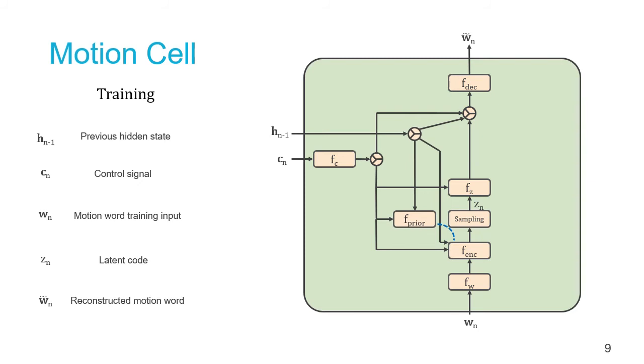The reconstructed word is computed by concatenating the latent code features, previous hidden state, as well as the control signals, and passing the full tensor through a decoding network.